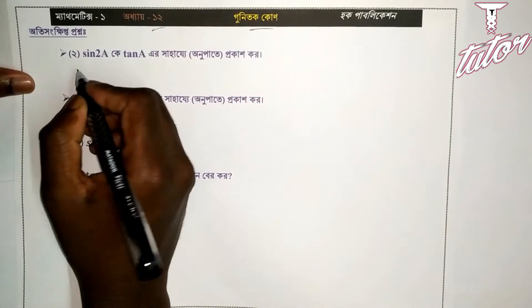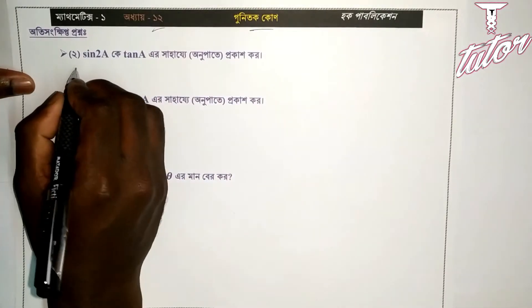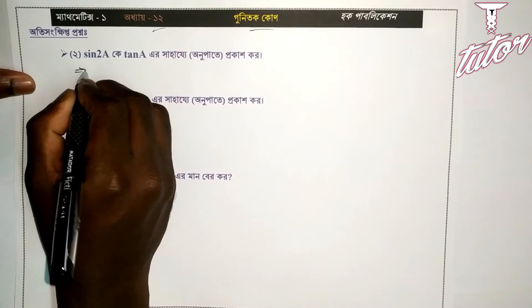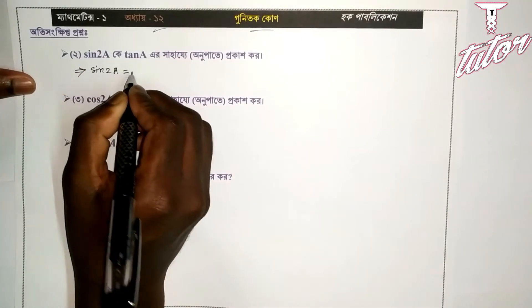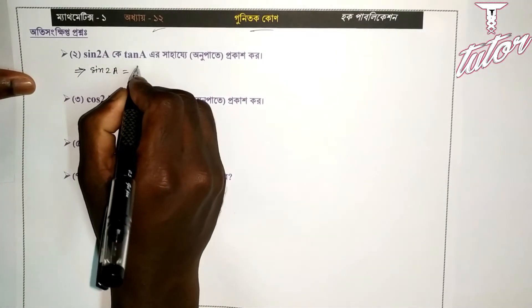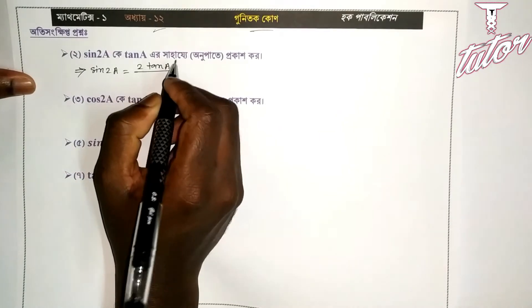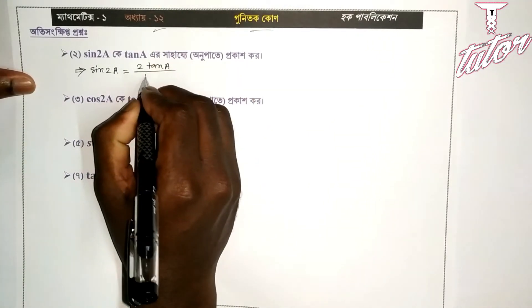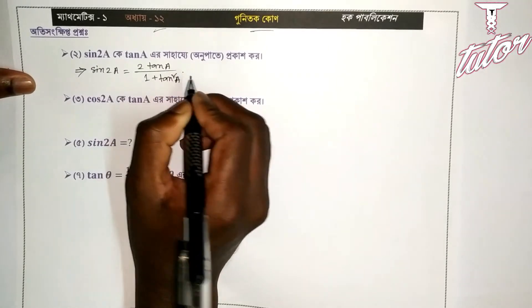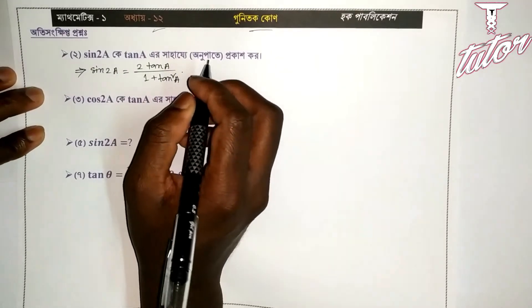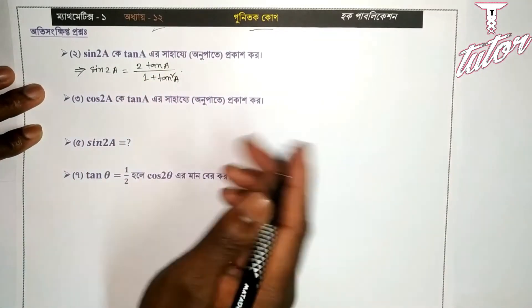sin 2a equals 2 tan a by 1 plus tan squared a. So for sin 2a, we will write 2 tan a by 1 plus tan squared a.